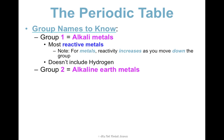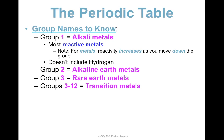Group two is called the alkaline earth metals. Group three are the rare earth metals. These two groups contain metals that make up the earth's crust. Groups three through twelve are also known as transition metals — group three is rare earth metals, but they're also transition metals. Groups thirteen, fourteen, and beyond have more generic names like the boron group, the carbon group, the oxygen group, the nitrogen group, et cetera.